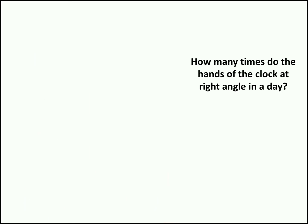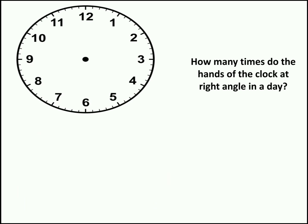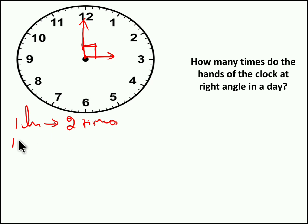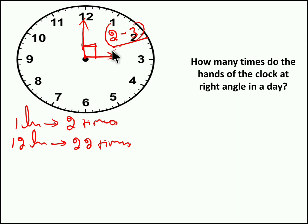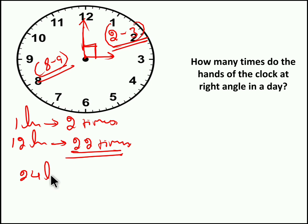Last question: how many times do the hands of the clock form a right angle in a day? A right angle means both needles make 90 degrees. In 1 hour both needles make 90 degrees 2 times, but in 12 hours they make 90 degrees only 22 times — because between 2 and 3, for example, they make 90 degrees only once, and similarly from 8 to 9 only once. So in 24 hours both needles form a 90-degree angle 44 times.